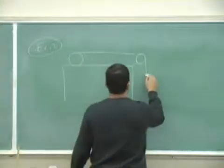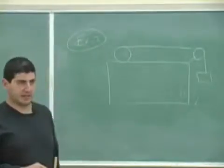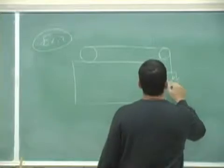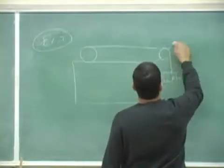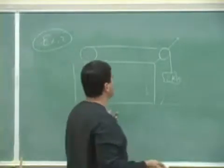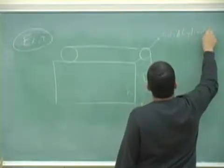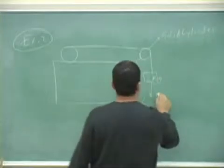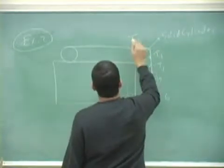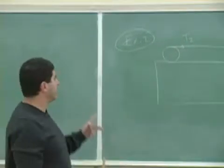Let's say there's a table and another object, and you have a two kilogram object here with a pulley. If the problem doesn't give you the shape of the pulley, you assume it's a cylinder; if it gives you the shape, you go with that. So let's say it's a solid cylinder, and you have 19.6, T1, T2. The problem asks you to solve for acceleration.